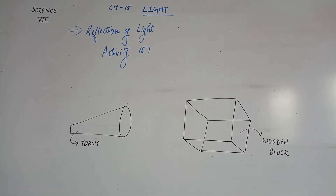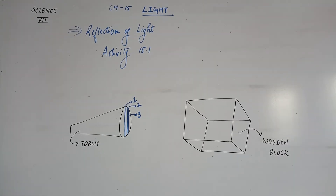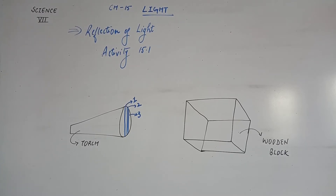Activity 15.1. As you can see in the diagram, you can see one, two, three paper strips on the chart paper.